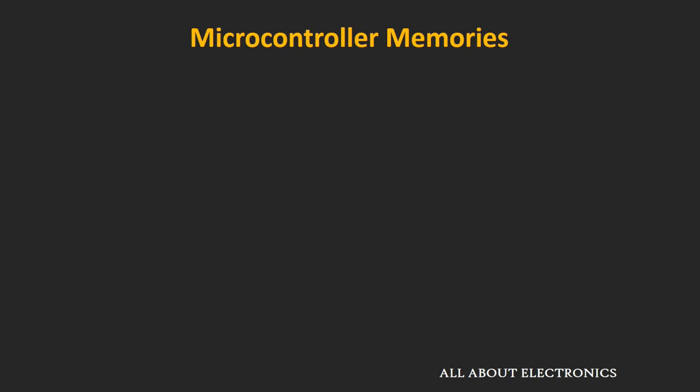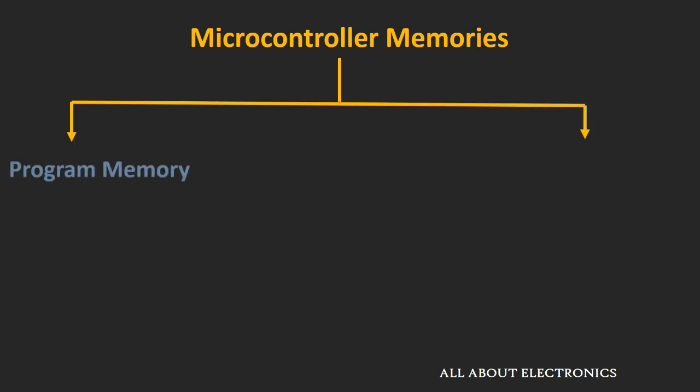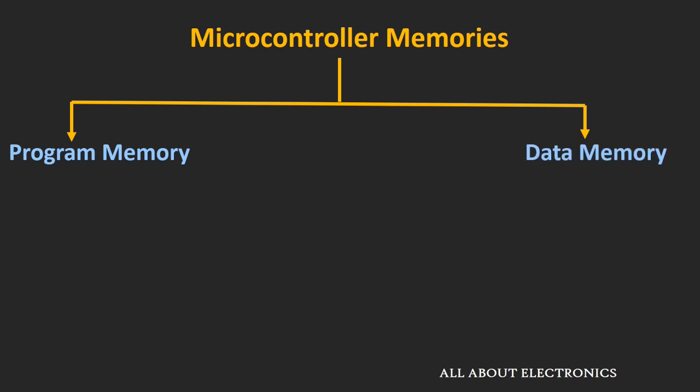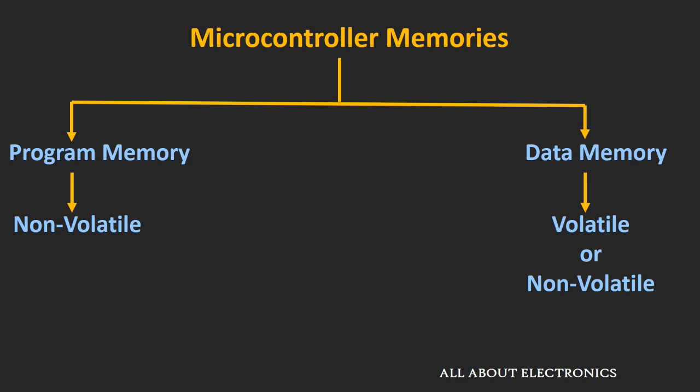Microcontrollers have two types of memory: program memory and data memory. Most of the microcontrollers we see today are based on the Harvard architecture, and in this architecture, the program memory and data memory are separate memories. This program memory has to be a non-volatile kind of memory, because even if the power goes down or if you reset the microcontroller, the code written inside should not get lost. While the data memory can be volatile or non-volatile.